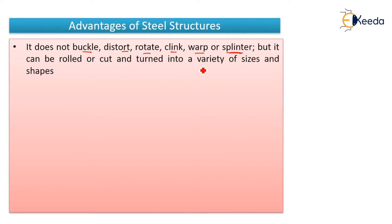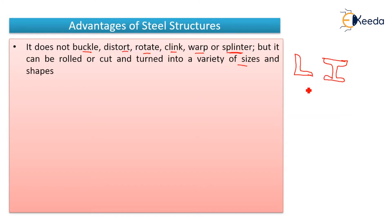Steel can be rolled or cut and turned into a variety of sizes and shapes. For example, there are angle sections, I-sections, channel sections, T-sections, and many more — so many sections are available in steel construction.